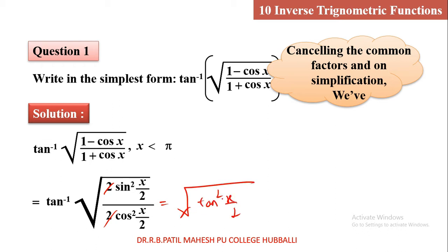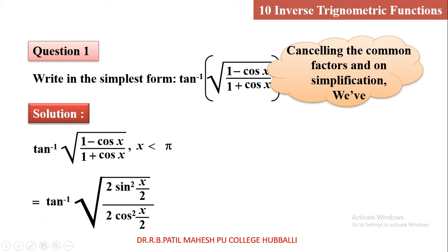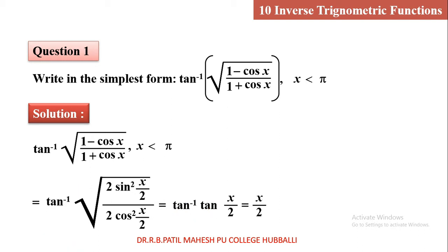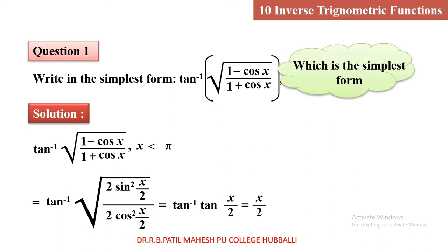You cancel root and square, and finally arrive at tan(x/2). So this becomes tan inverse of tan(x/2). By the property of inverse trigonometry, the tan inverse and tan get removed, and the value is x/2. The simplest form of this expression is x/2.